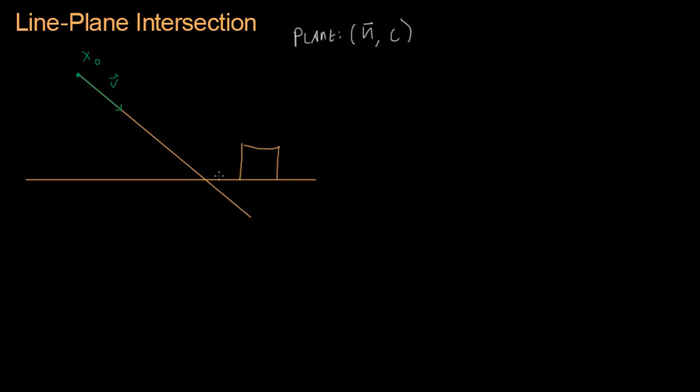And so we're going to say the normal vector is that right there. And we'll call this point over here, point C. It can be any point in the plane, but I'm going to choose this point, point C.